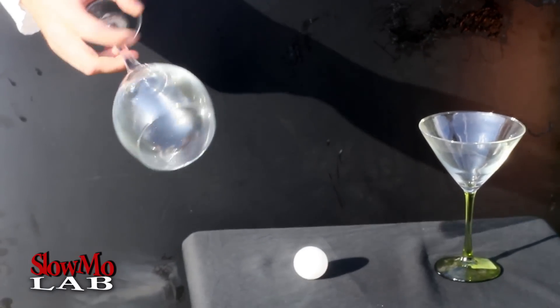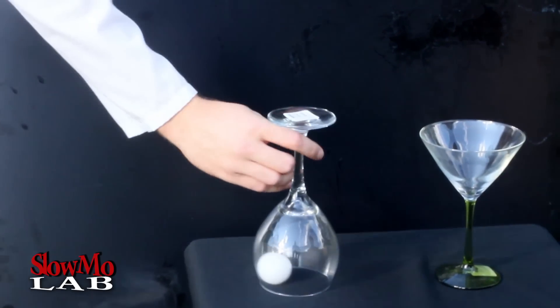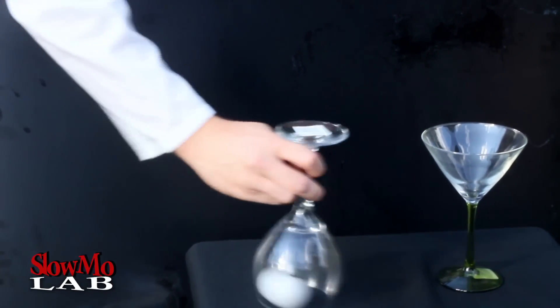So the way we're gonna demonstrate it is very simple. We're just gonna practice on the ping pong ball first. We're gonna cover it with a wine glass and we're gonna start spinning.